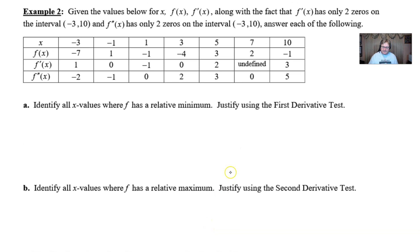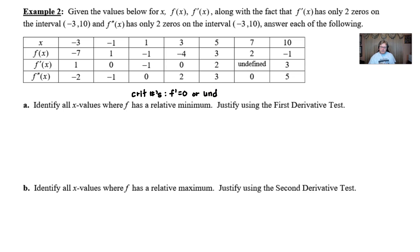Let's scroll back to the top and dive into part A. When finding a relative minimum using the first derivative test, we're initially looking for critical points — where f' is equal to zero or where f' is undefined. Going to the table, there is an f' row already provided, meaning the derivative has already been taken.